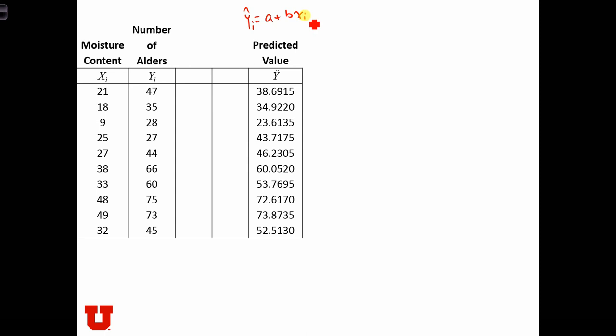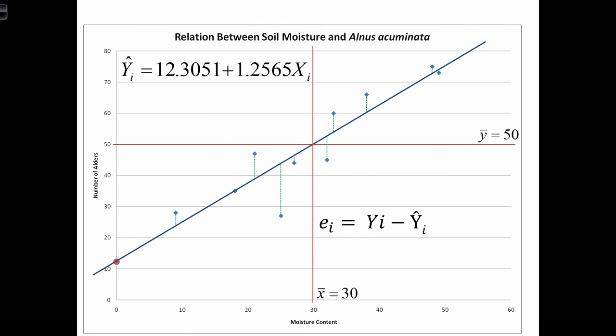So we plug in 21, and we get an estimate of 38.69. We plug in 49, and we get an estimate of 73.87. If you look back over here, let's look at this 49 example. So 49 is somewhere over here, and our estimate of 73 was along this regression line at the point where x equals 49.